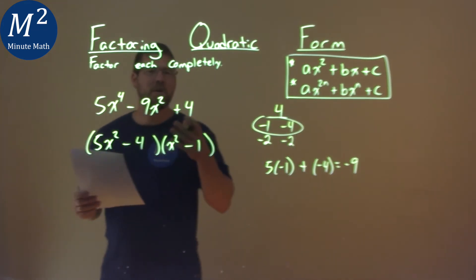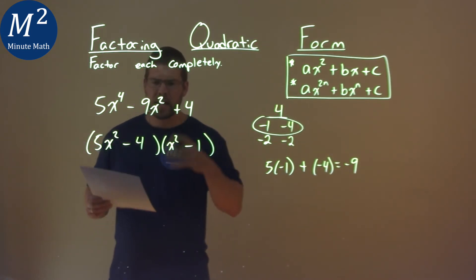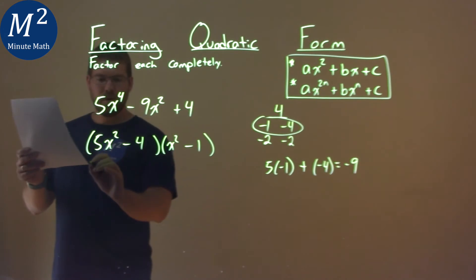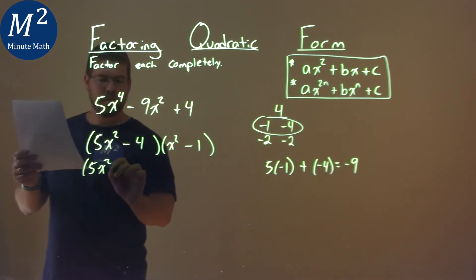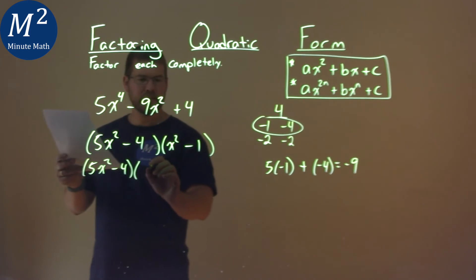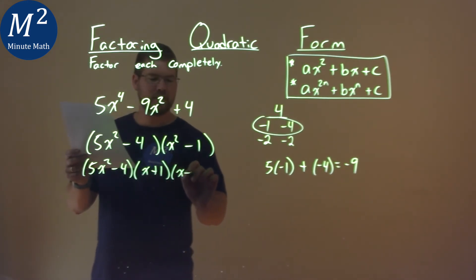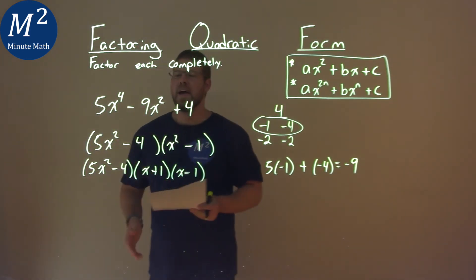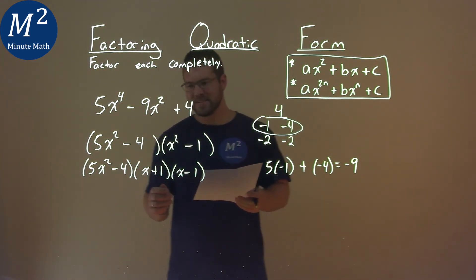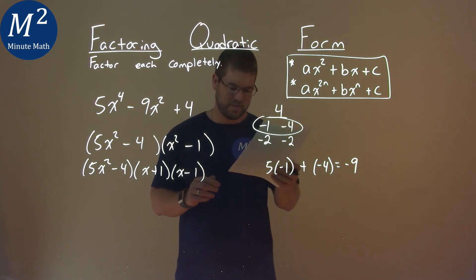I'm not done yet. What do you notice? We have an x squared minus 1 — that can actually keep factoring out. So we bring down the 5x squared minus 4, and x squared minus 1 is the same thing as x plus 1 times x minus 1. And now we're done. Our final answer is 5x squared minus 4, times x plus 1, times x minus 1.